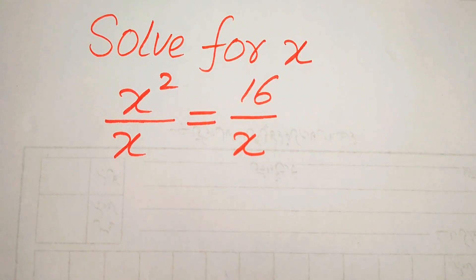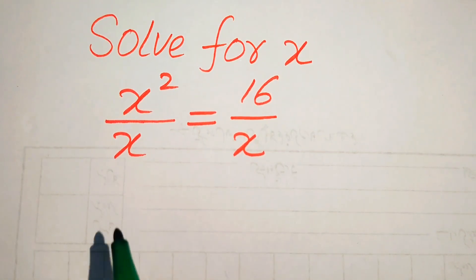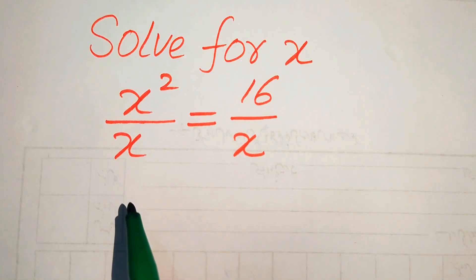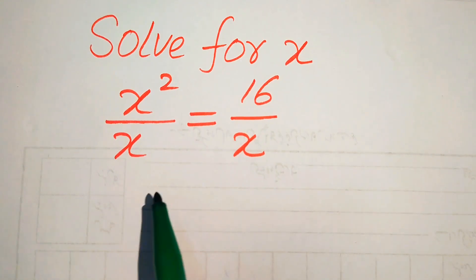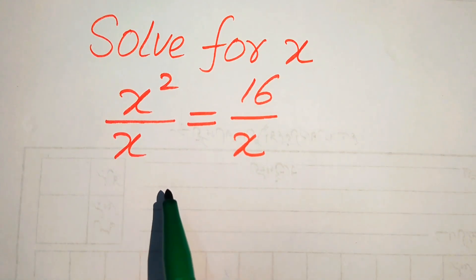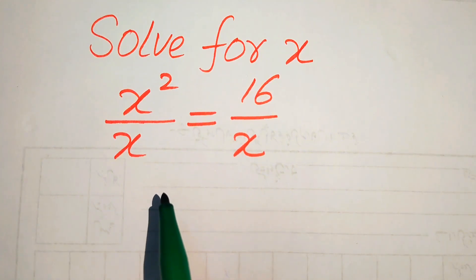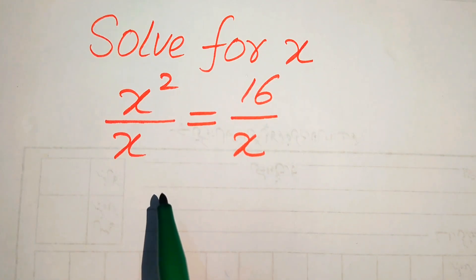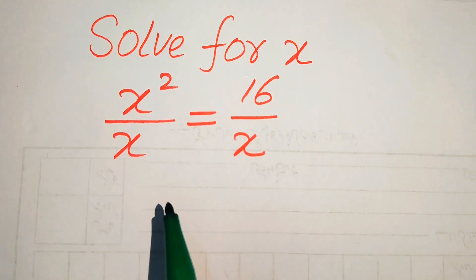Hello everyone. How to solve this problem for the values of x if we have x squared divided by x equals to 16 over x. We solve this problem for all the values of x. First we find all the roots of this equation, and at the end we will verify which of the roots are solutions of this equation and which of the roots are extraneous roots.